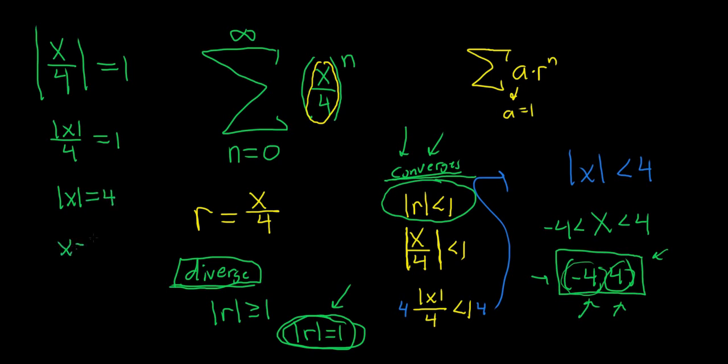absolute value of x is equal to 4. Drop the absolute value, you get a plus or minus, boom, the endpoints. And we know it diverges at the endpoints.